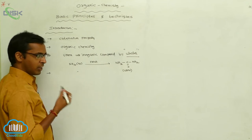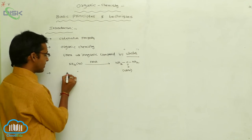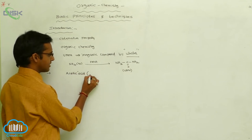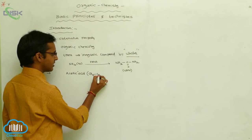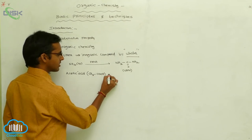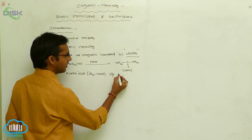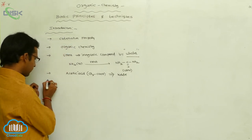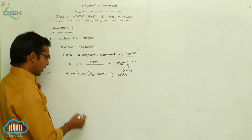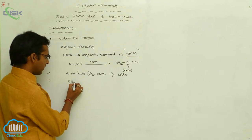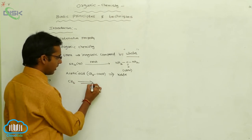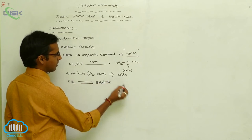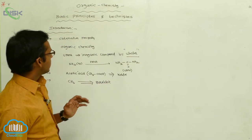Not only this — Kolbe pioneered the synthesis of acetic acid. The formula of acetic acid is CH3COOH. Another synthesis: methane was prepared by Berthelot.